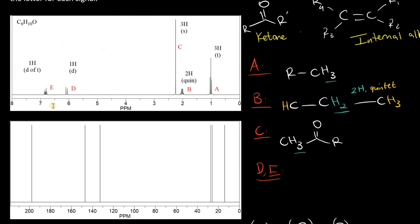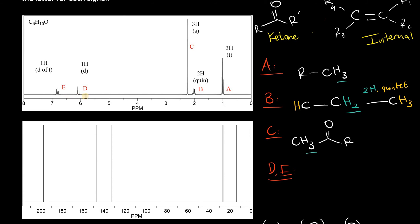Now let's take a look at the alkene signals D and E. In signal D, we have a 1H doublet, and signal E, we have 1H doublet of triplet. Doublet of triplet would mean, on one side we have 1 proton neighbor, and on the other side we have a CH2 group.